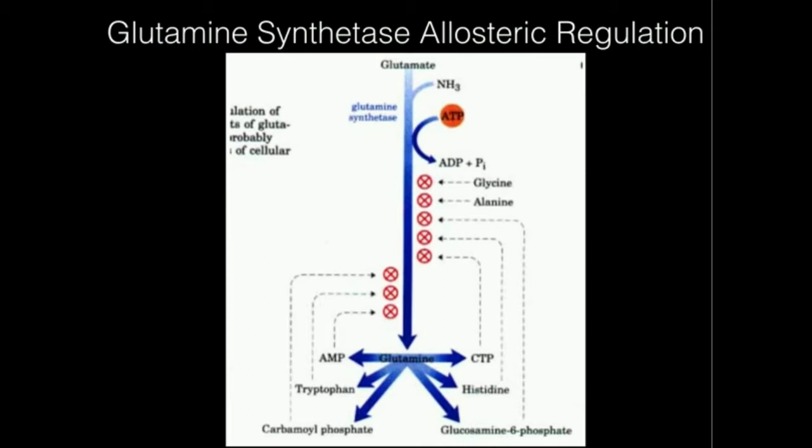All we're going to talk about now is just the allosteric regulation of glutamine synthetase. This displays the net reaction, but the main thing I want to show you is that glutamine synthetase, at least allosterically, is for the most part just turned on — it's sort of what we would say constitutively on allosterically. The way it's regulated mainly is by turning the enzyme off, by allosteric inhibition.